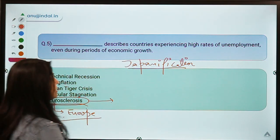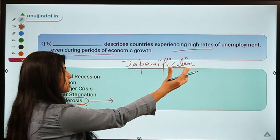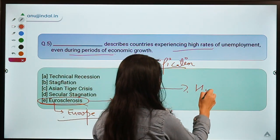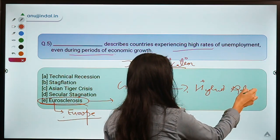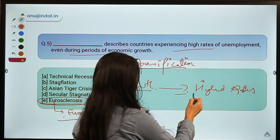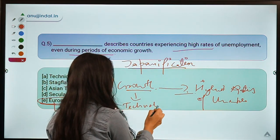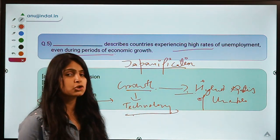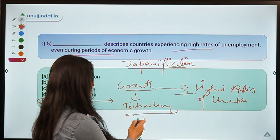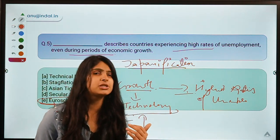Eurosclerosis refers to any country experiencing higher rates of unemployment amidst economic growth. European countries once experienced a similar situation where there was growth but also higher rates of unemployment. Usually, growth drives unemployment down and increases employment, but if growth is leading to higher unemployment it may be because growth is being driven by technology and people are not able to upgrade their skills. All the monotonous and menial jobs are being done by technology, which drives growth through efficiency, but people cannot upgrade their skills to fill higher-skilled roles.